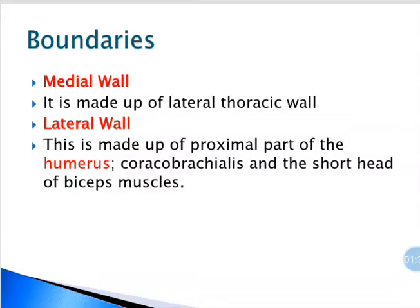The medial wall is made up of the lateral thoracic wall, upper part. The lateral wall is made up of the proximal part of humerus, the shaft of humerus, and muscles — the coracobrachialis and the short head of biceps.